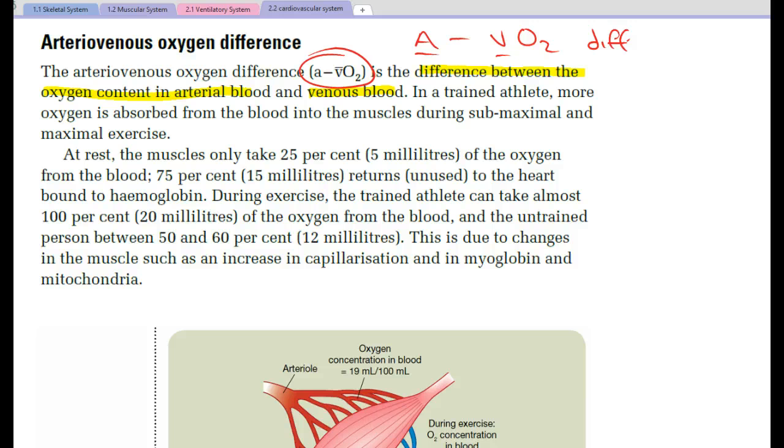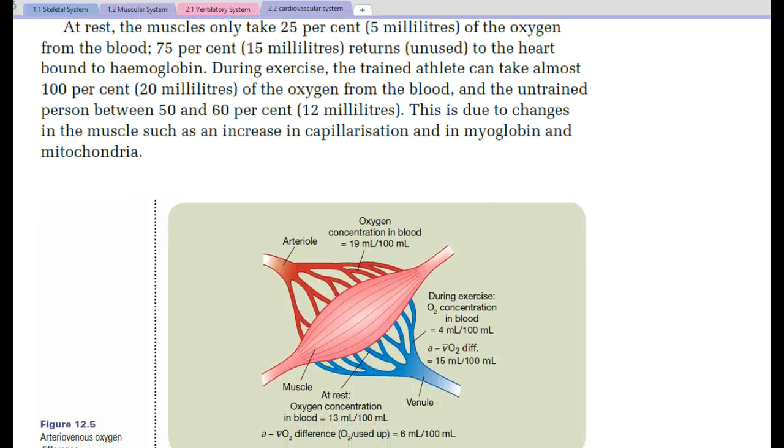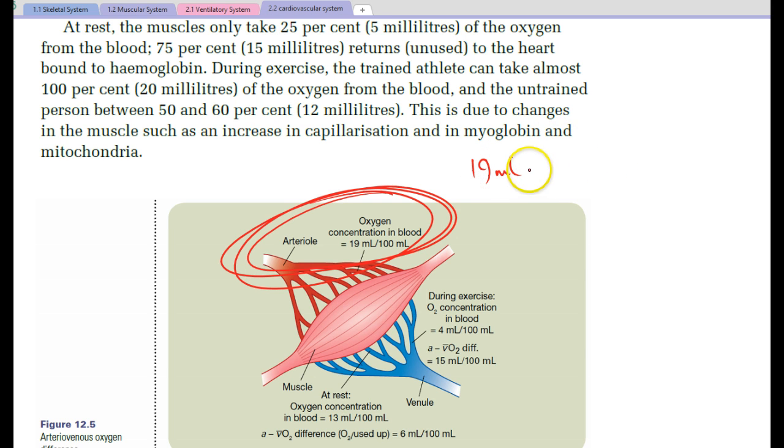I'm just going to skip the next little bit of the text and have a look at the diagram. So here at rest or during exercise, arteriole blood oxygen concentration is 19 millilitres of oxygen per 100 ml of blood. Some texts have it as 19, some have it as 20 ml.